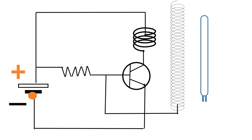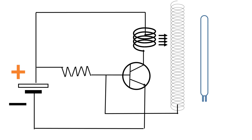Emitter current flows through the transistor. It enables current flow through the primary coil and the transistor. The sudden flow of current induces electrical energy in the secondary coil. Though the mini tube light is not directly connected to the circuit, as it is in the vicinity of the electrical energy generated by the secondary coil around, it glows.